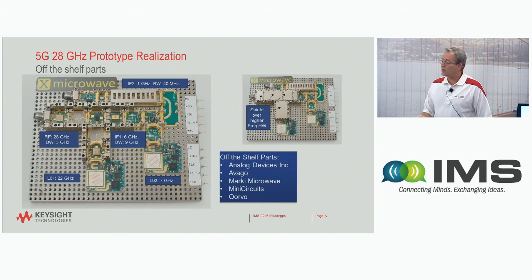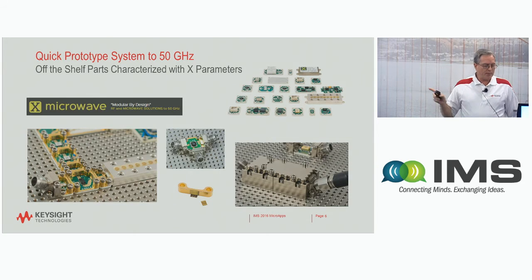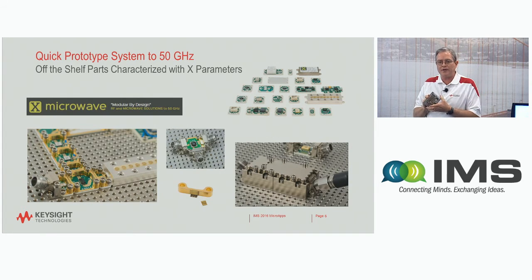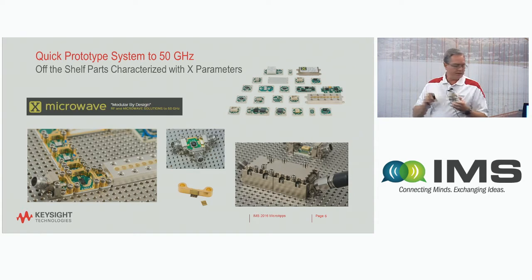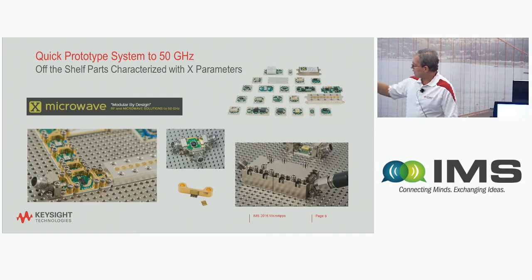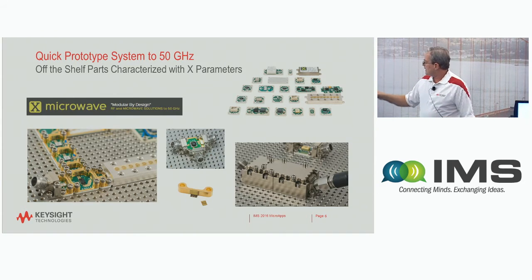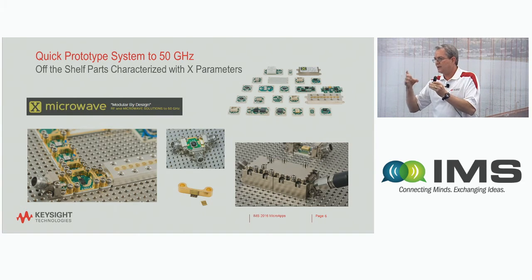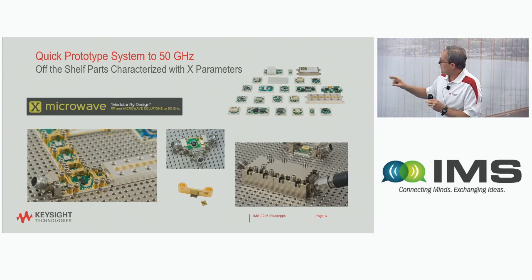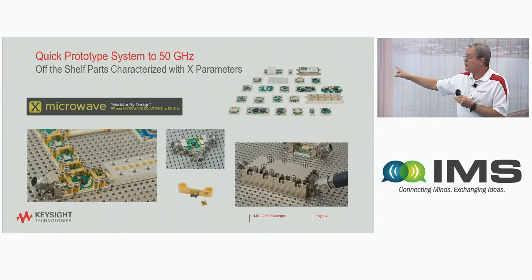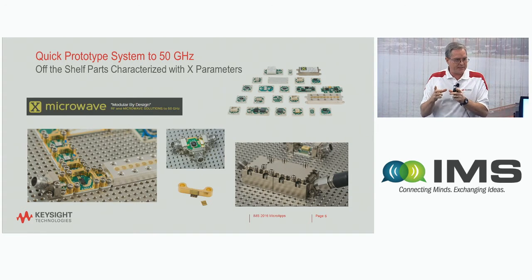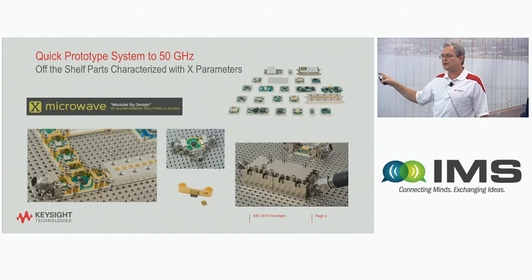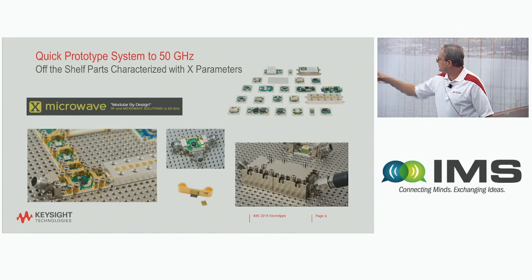I want to talk a little bit about X Microwave. This is a rapid prototyping system to 50 gigahertz. The best way to describe it is it's like RF Legos — you can move these things around. The launches and connections are at particular points on the grid. In the bottom center you can see a co-planar transmission line that you can turn upside down, and that's what's used to connect the RF blocks. It makes it very easy to build these and even move them into their own packaging. Lots of component vendors are now building prototype boards that fit on this particular grid.